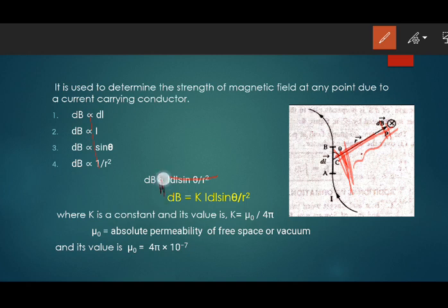Combining all these four factors, dB is proportional to I dl sine theta by r squared. To remove the proportional sign, we use a proportionality constant k. So dB equals k I dl sine theta by r squared, where k is a constant and its value is μ₀ by 4π.